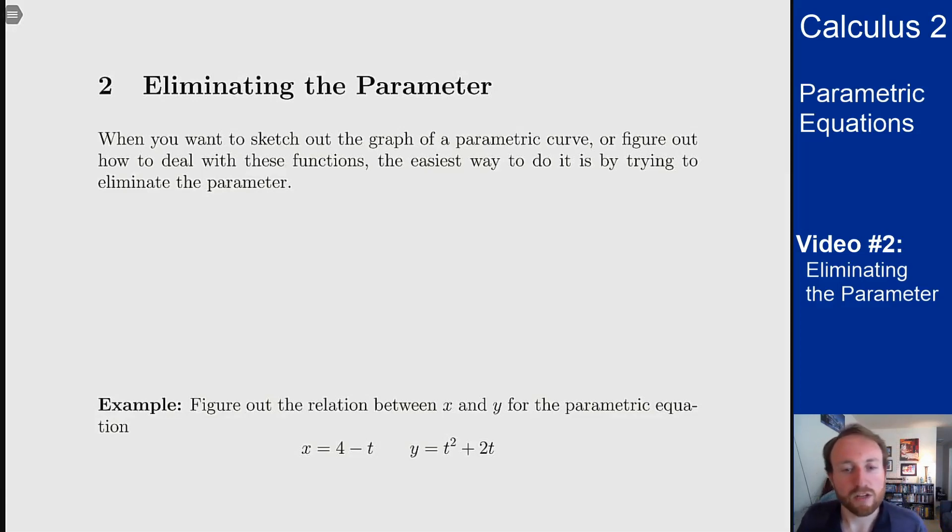So the easiest way to usually interpret what a graph will look like, especially if it's given parametrically, is by eliminating the parameter. And the idea here is I want to get rid of the t and just get down to y as a function of x like we know from before—we know what those functions look like.